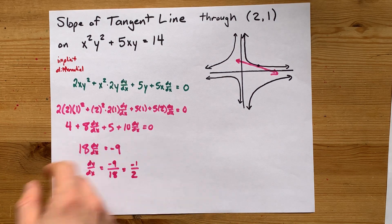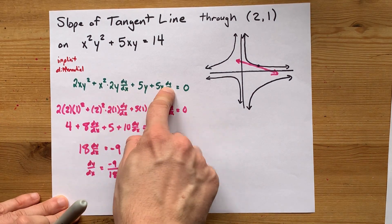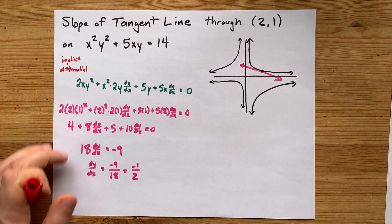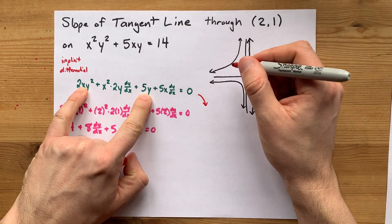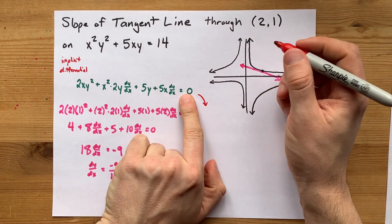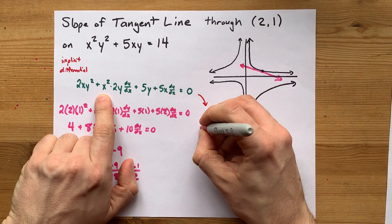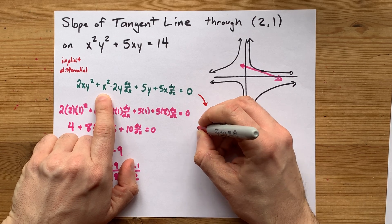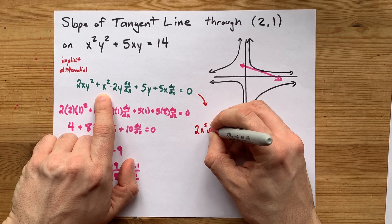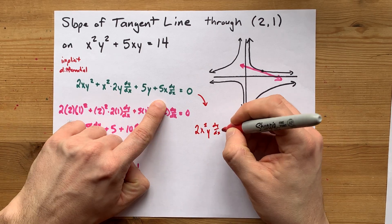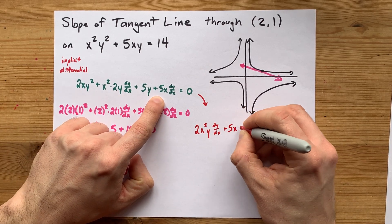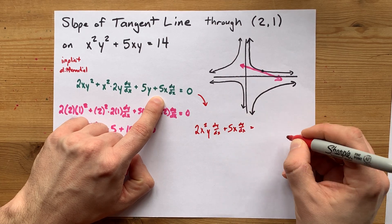But what you may have wanted to do is to isolate for dy by dx in that equation itself. What I'm going to do is move all of the things that don't have dy by dx to the other side of the equal sign here. Actually, that's 2x squared y times dy by dx.